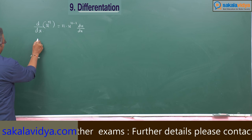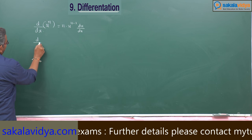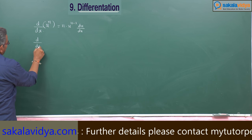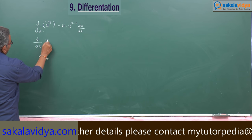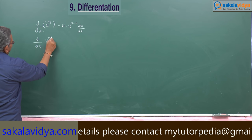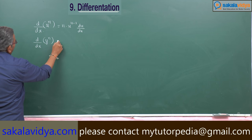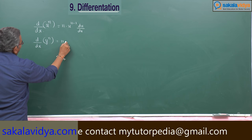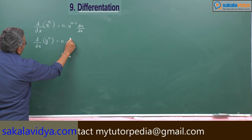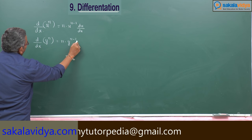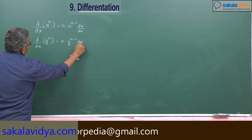Suppose, instead of u, y is there — y^n. Similarly, d/dx of y^n is n into y^(n-1) into dy/dx.